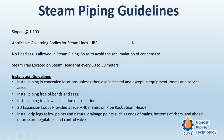Steam lines are normally sloped at a ratio of 1:100. The applicable governing body for steam lines is IBR. Dead legs are not allowed, because if there is a dead leg — where the pipe goes down and then back up — condensate accumulates in that dead leg and is not acceptable. Steam trap locations on the steam header are required at every 30 to 50 meters.